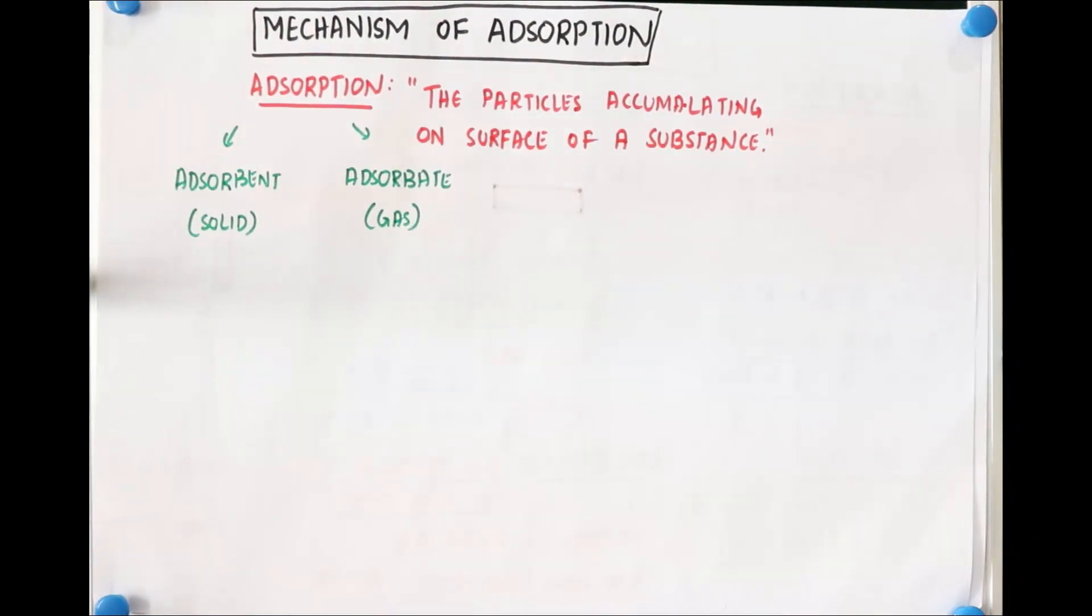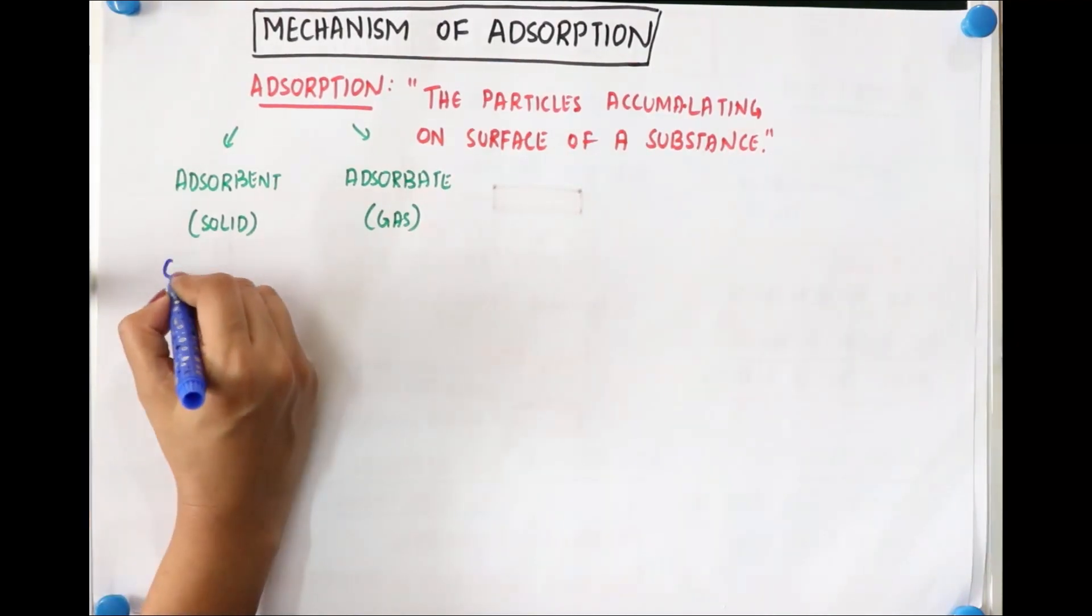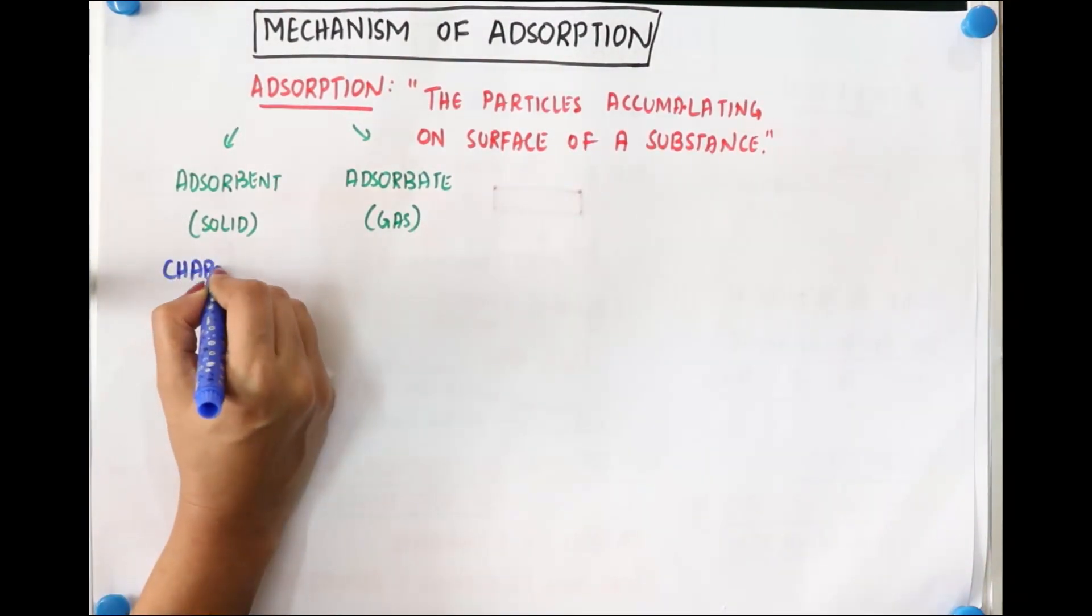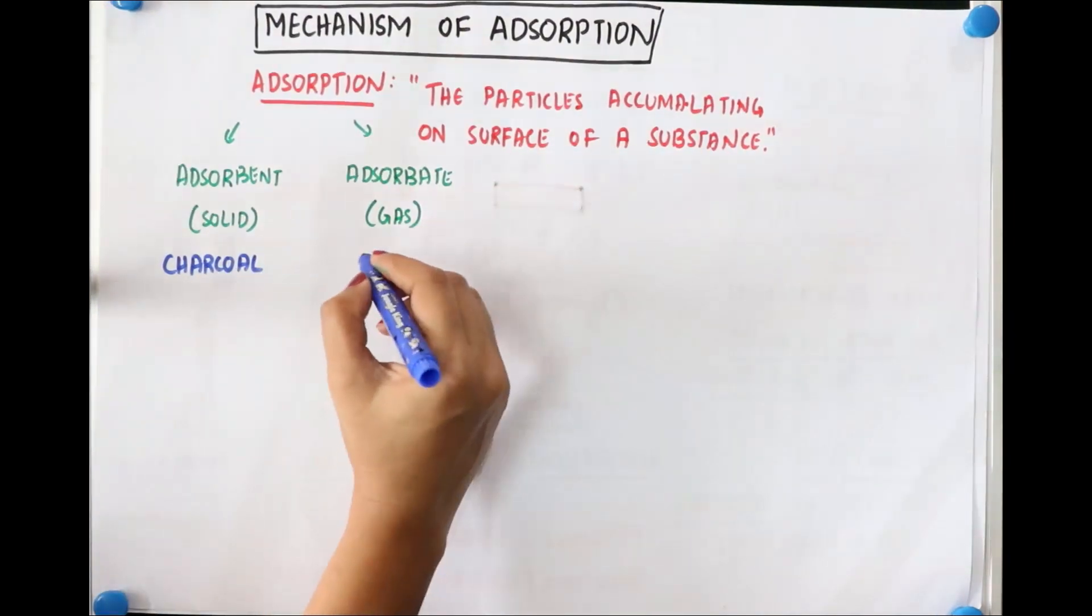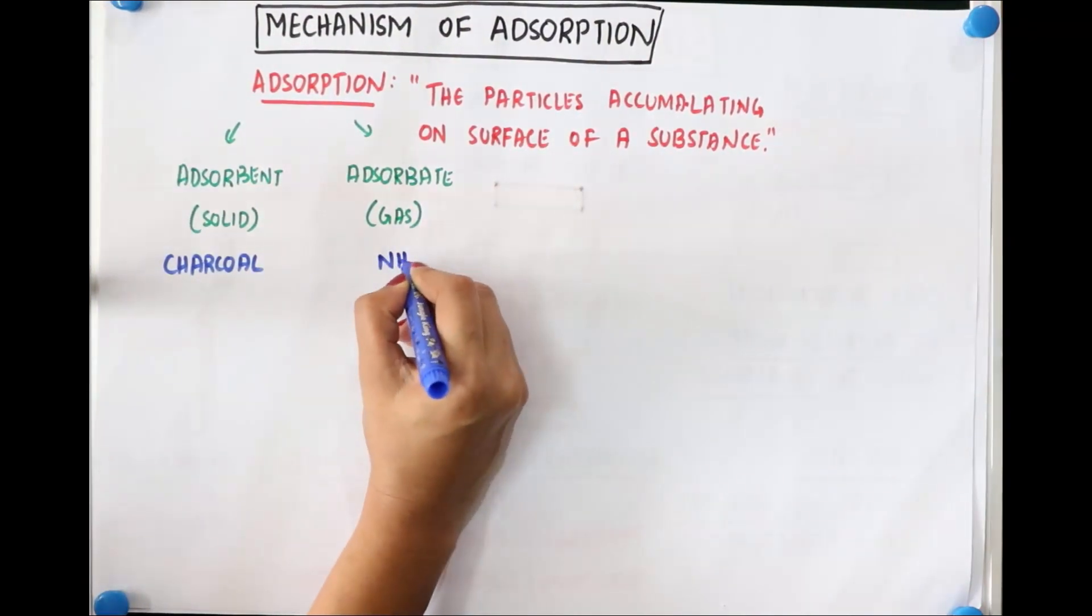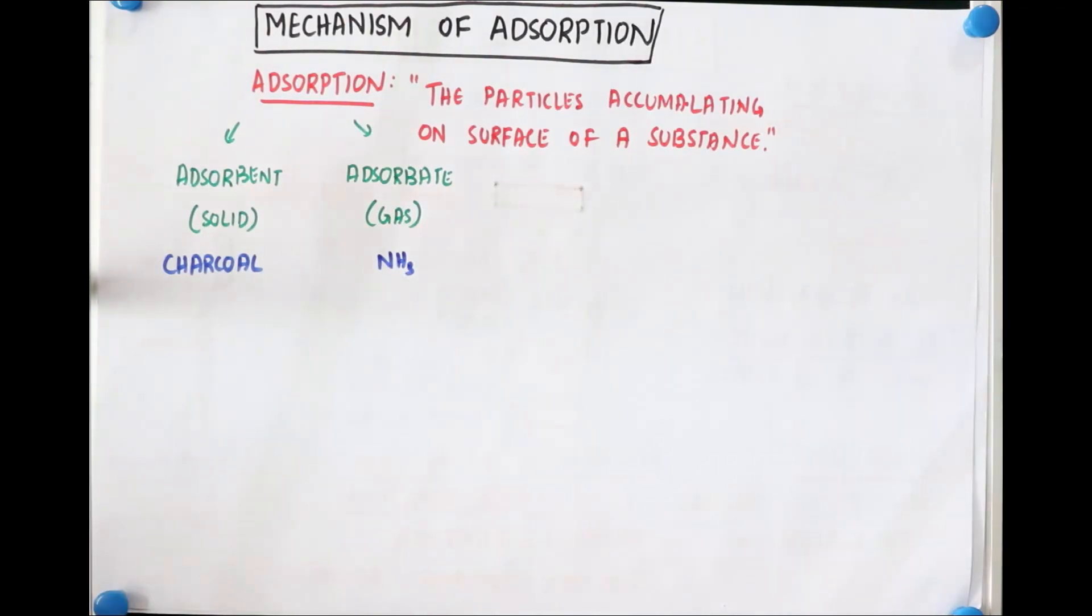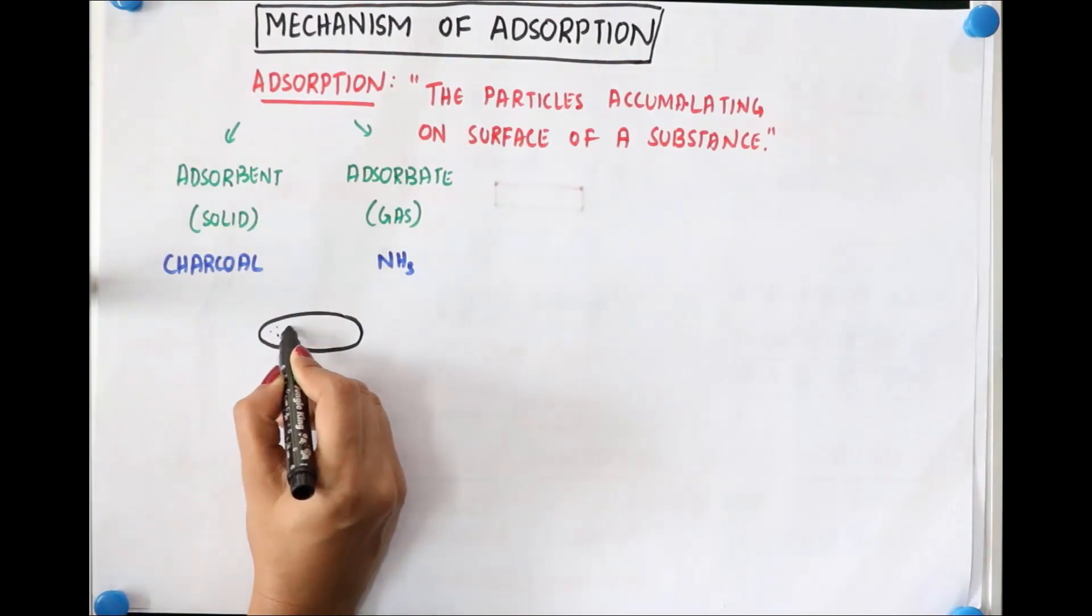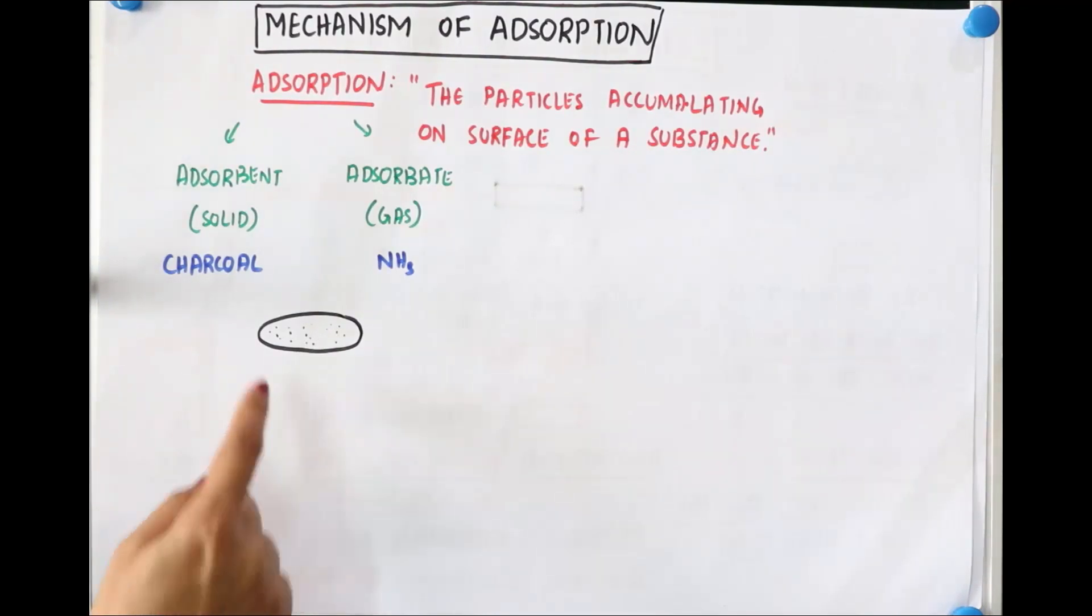The solid, we can take the example of charcoal, and the gas particles is ammonia. We can take any gas particle but let us take ammonia. Charcoal is a good adsorbent, okay? So let me consider this as a charcoal. Think that this is a charcoal, and there are some minute pores which are present on the surface of charcoal. If you observe it carefully you can see this. And now when this ammonia gas, let me represent ammonia gas this way.